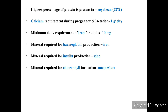The minimum daily requirement of iron for adults. The mineral required for hemoglobin production is iron. The mineral required for insulin production is zinc. The mineral required for chlorophyll formation is magnesium.